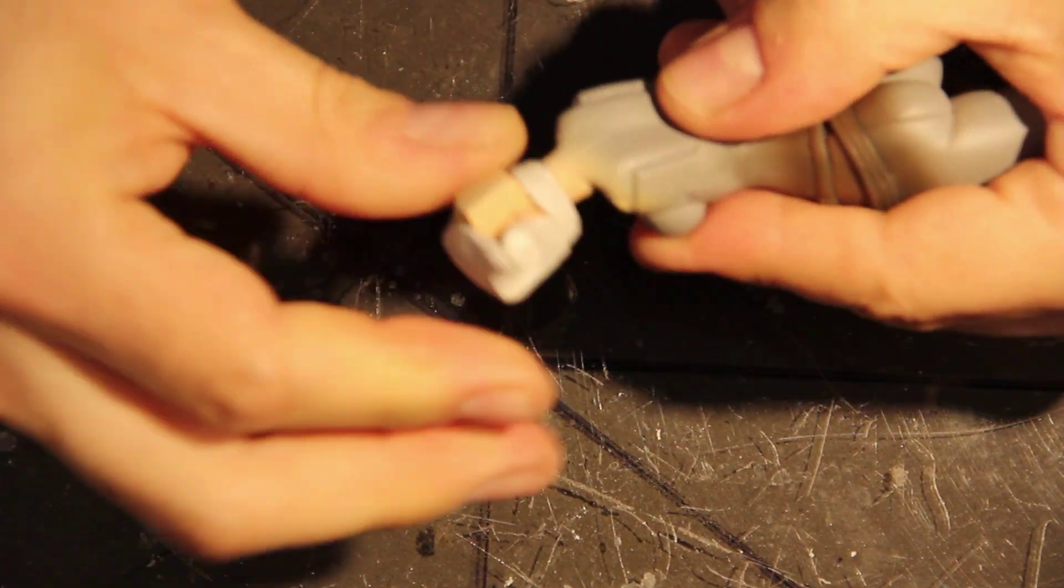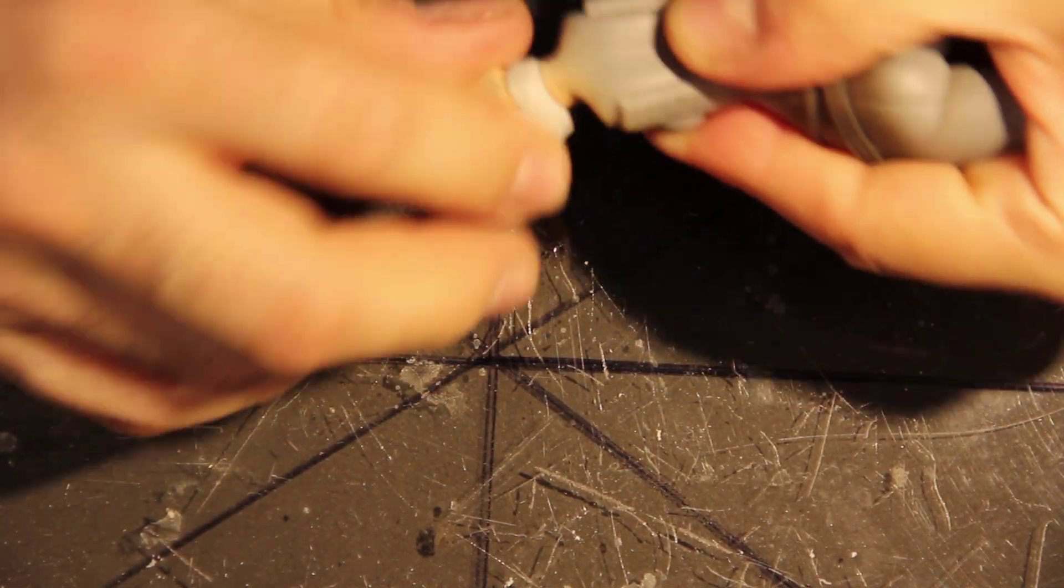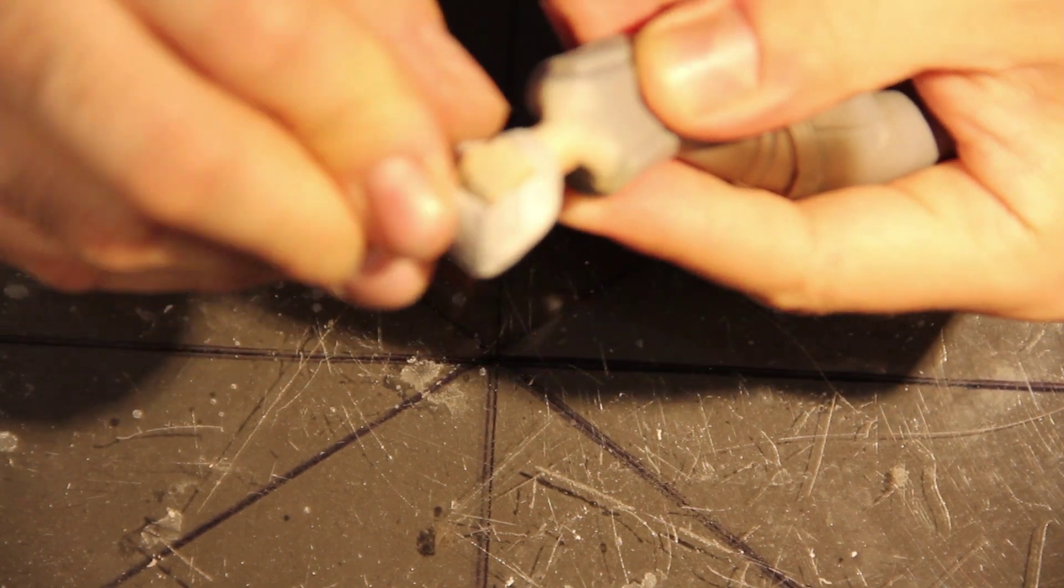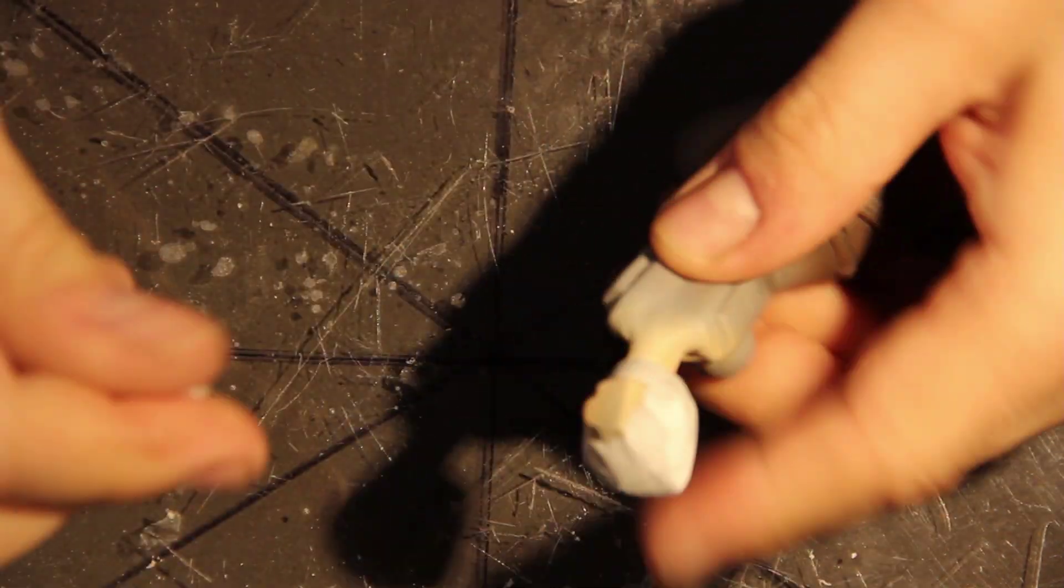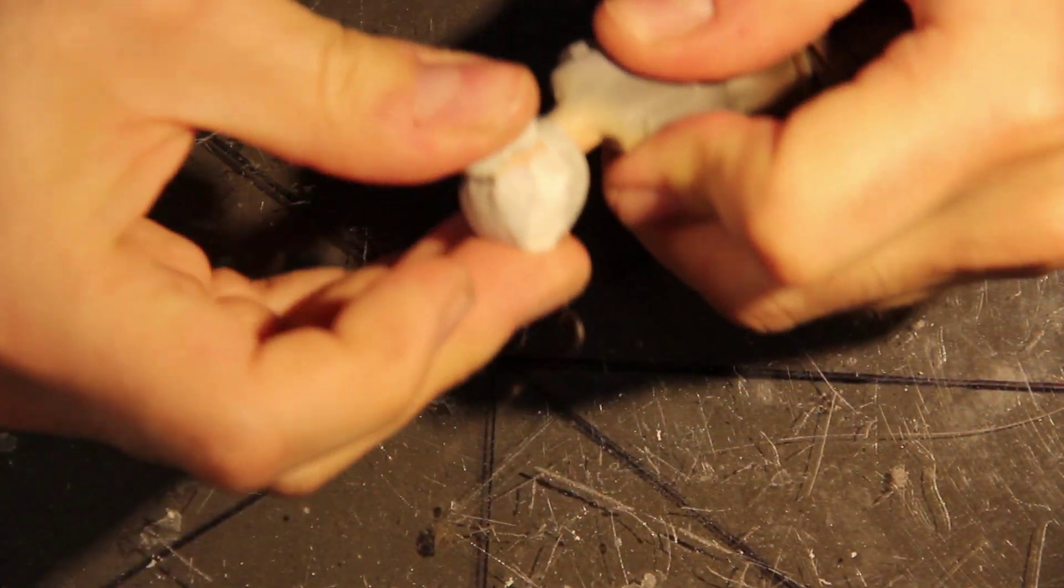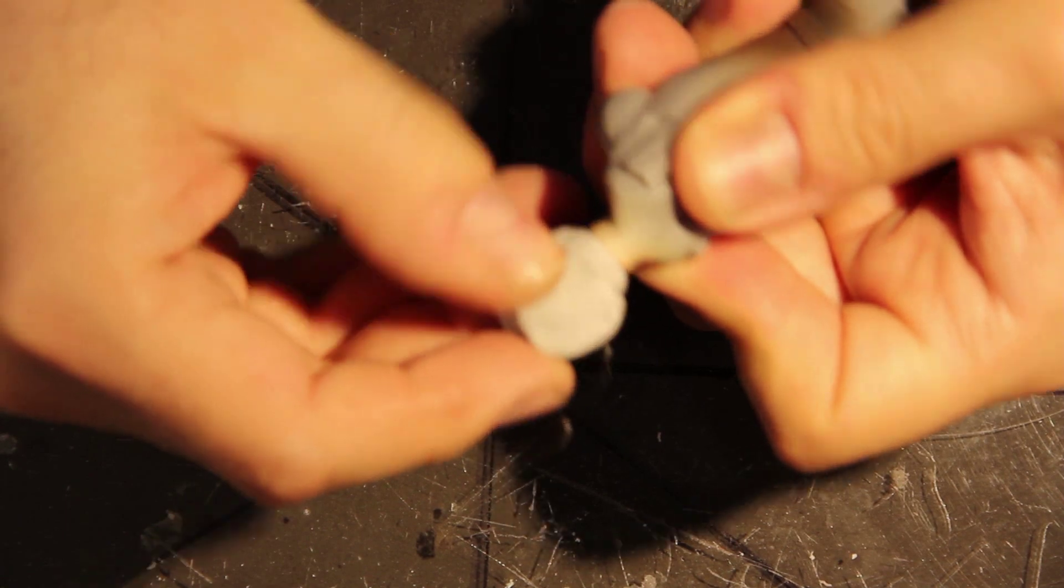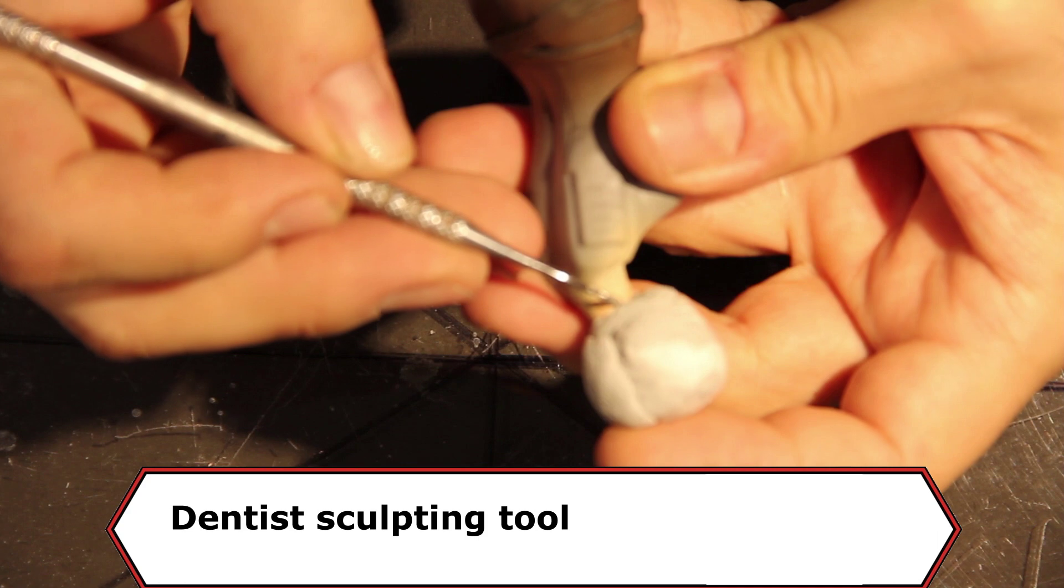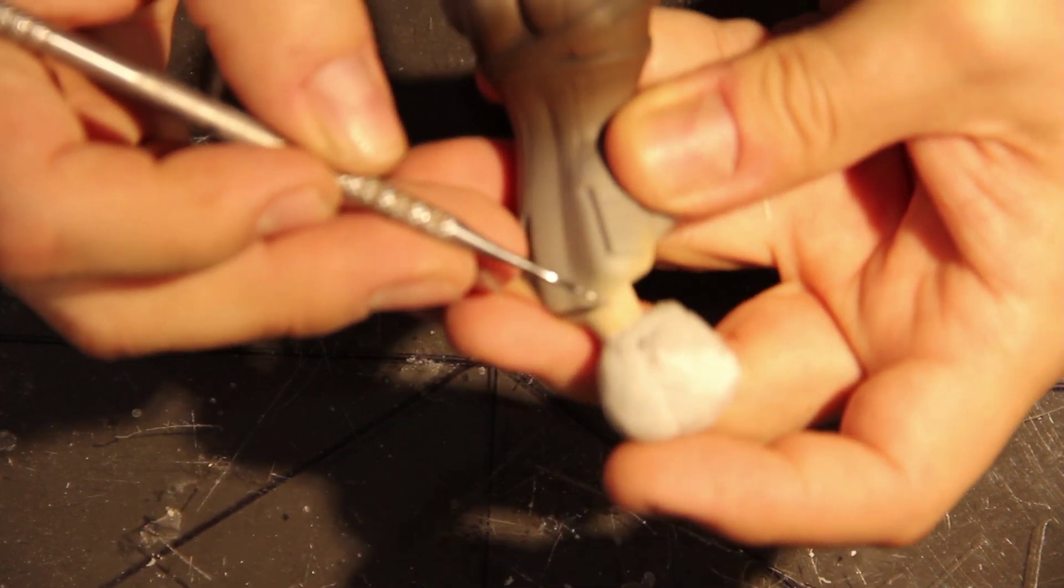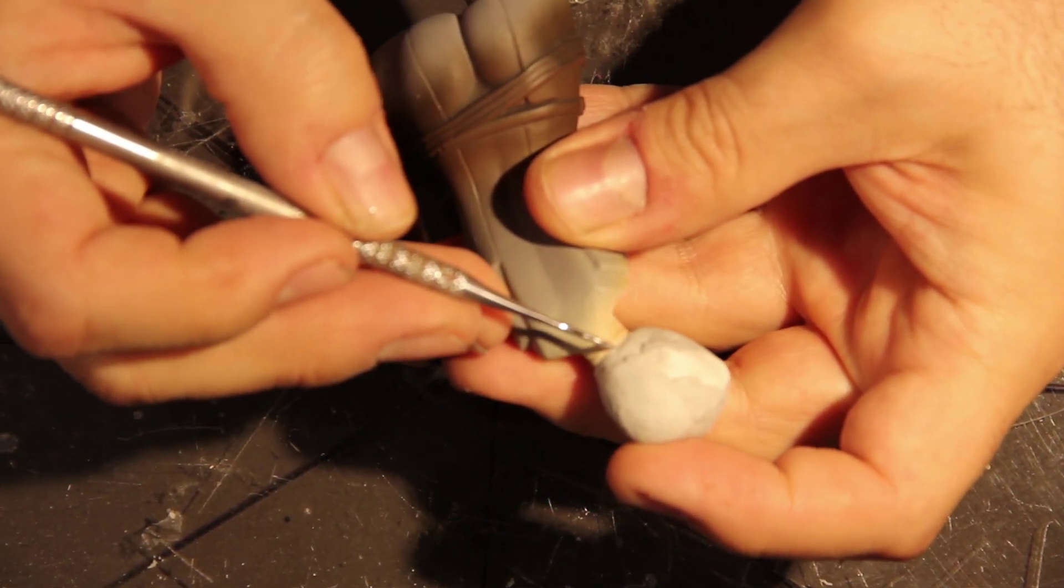Once the paint is perfectly dry after a day or so we can start adding the masks. In this case I am using a sticky gum named tack. This material doesn't leave any stains or residues on the parts once removed. It is very easy to apply and can be reused many times over. The border lines can be detailed using a modeling or sculpting tool.